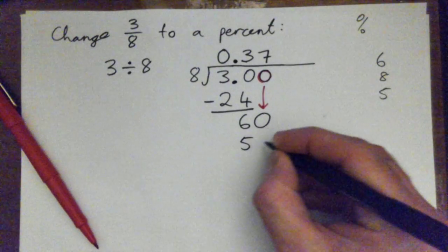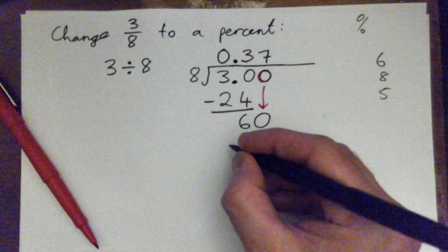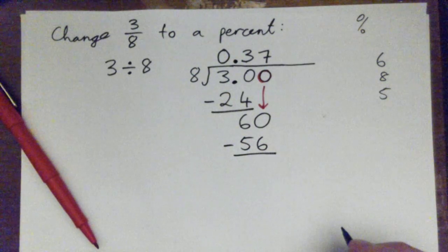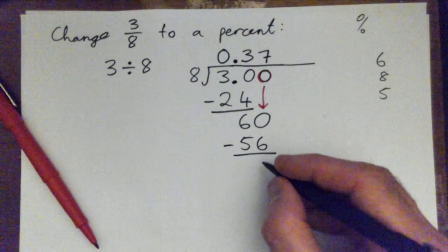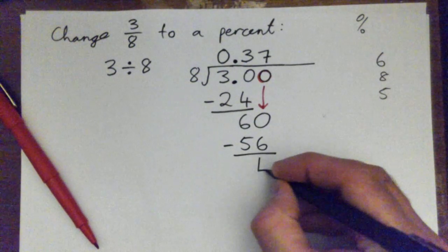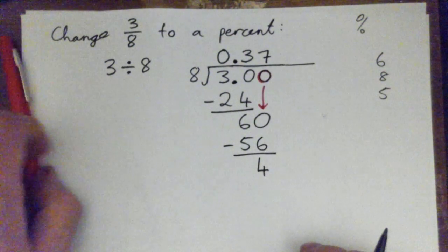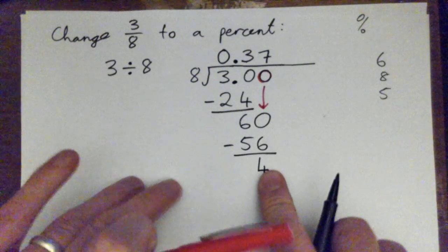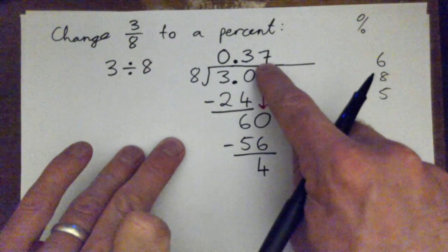And then we subtract to get the remainder. Sixty minus fifty-six. Remainder. Lovely. Yep, four. And that is less than eight. So great. So seven was correct. It was a good guess.